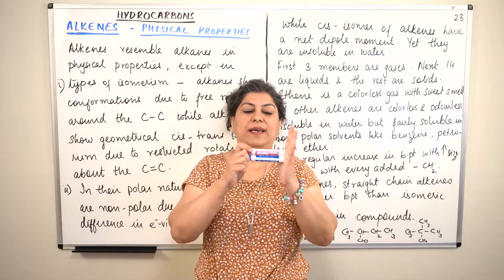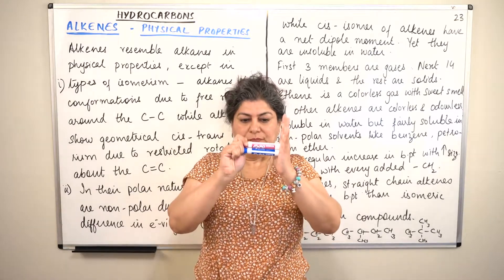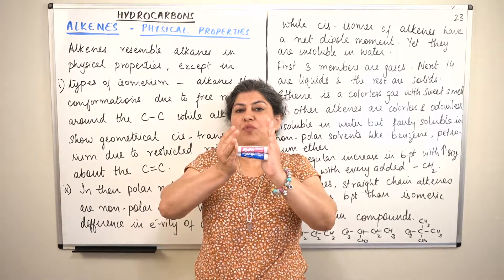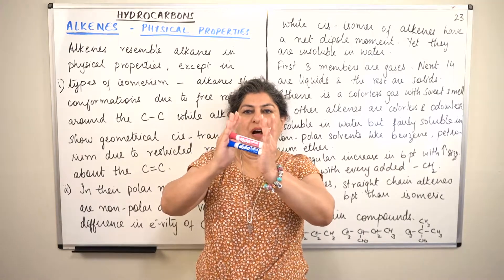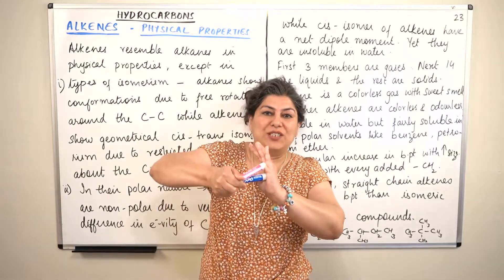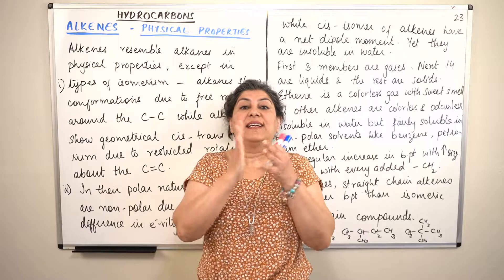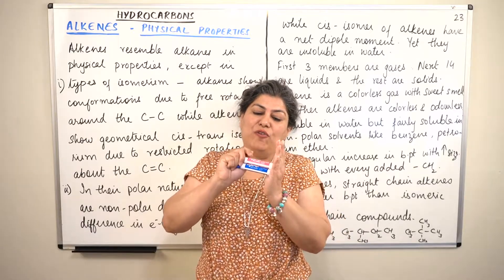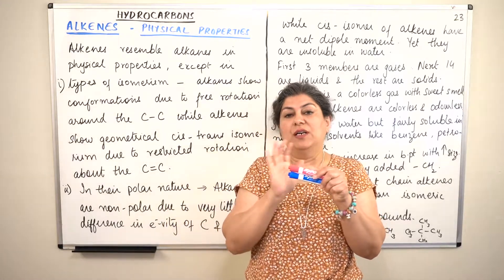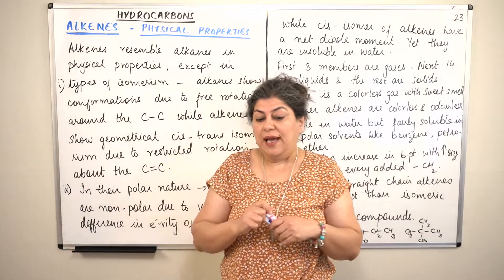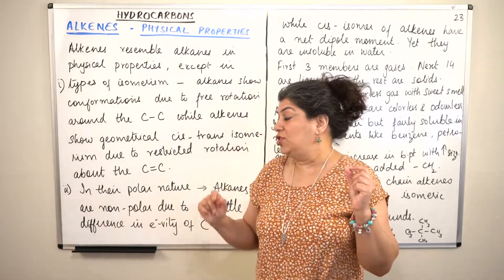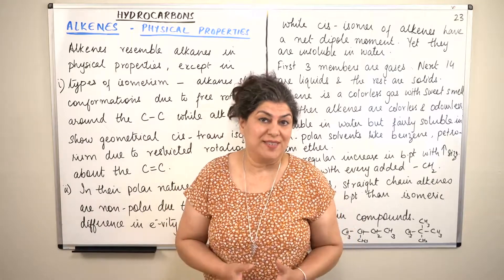In alkenes, on the other hand, there is a double bond. If we twist one side, the bonds kind of stop each other after a certain angle. You cannot force the bonds to twist further because they act as a hindrance to the movement, and therefore complete rotation around the carbon-carbon double bond is not possible. As a result, we do not get conformations in the case of alkenes.